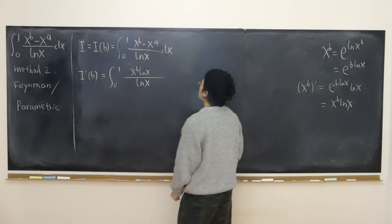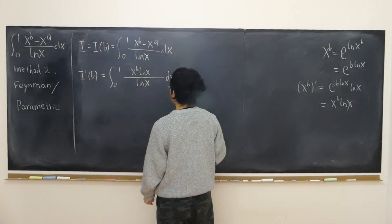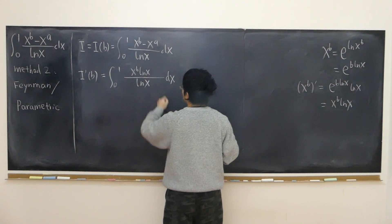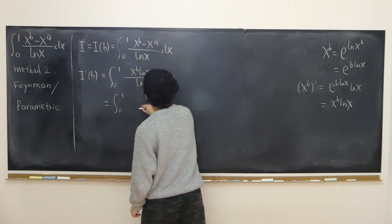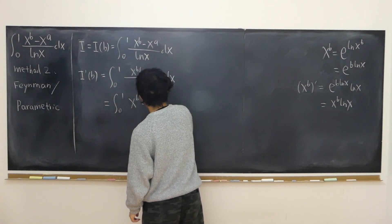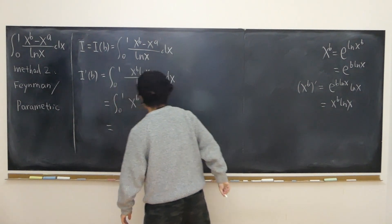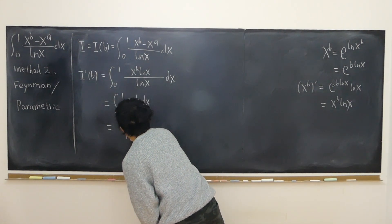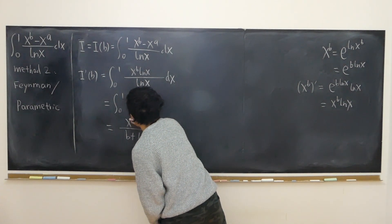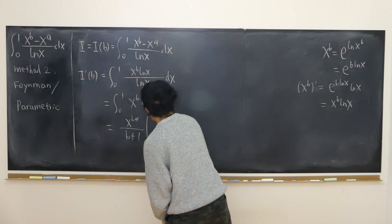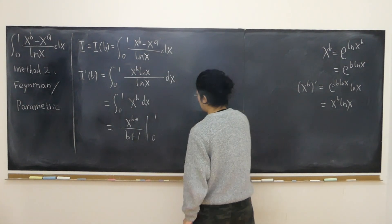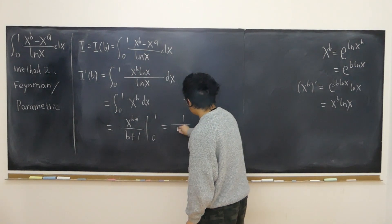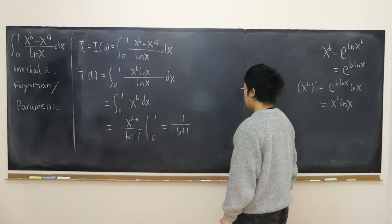This is legitimate, and the benefit of using b as the variable here is that we can simply cancel out log(x) in the integrand. So I'(b) equals the integral of x^b dx, which is easy to integrate. This equals x^(b+1)/(b+1) evaluated from 0 to 1, which is simply 1/(b+1).